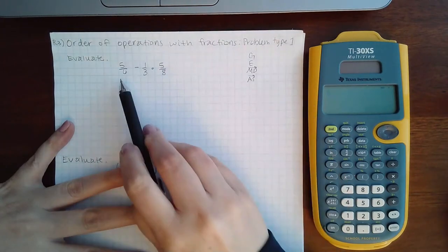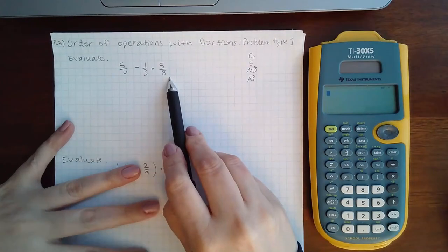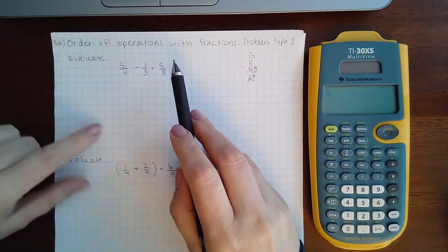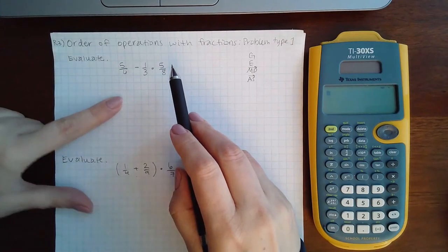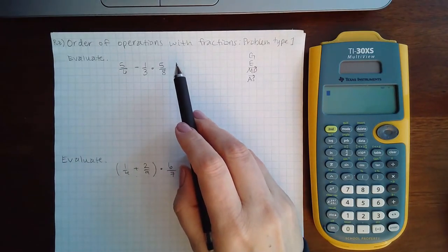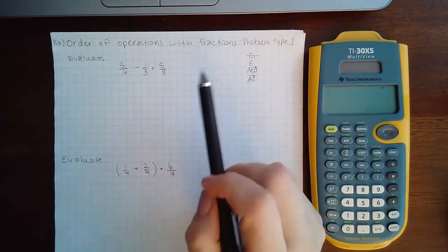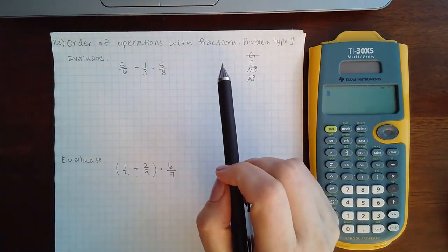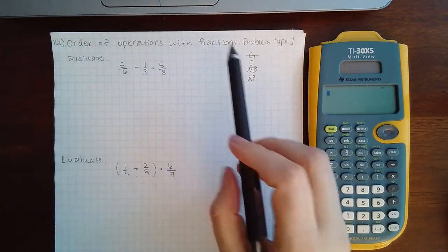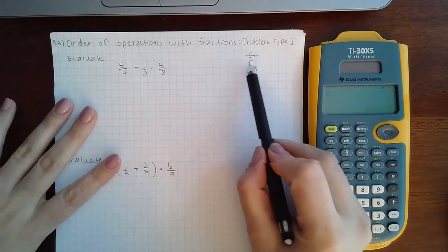There are no grouping mechanisms here - parentheses, brackets, square roots, absolute values, that sort of thing - so we're going to skip that step. There is nothing to evaluate, no exponents, square roots, absolute values, things like that.